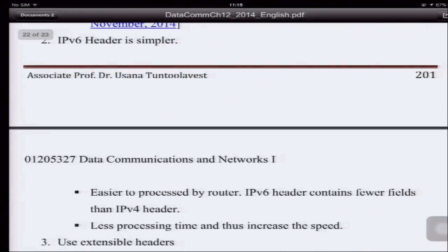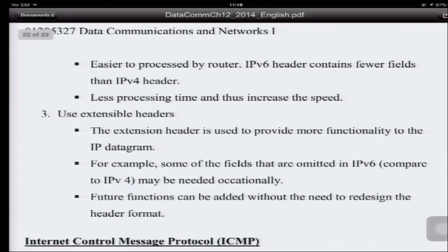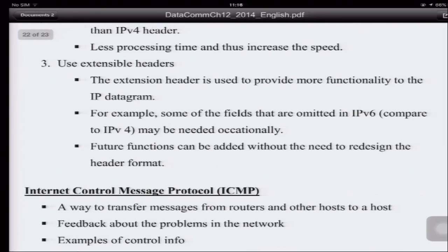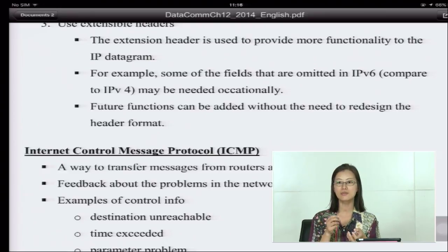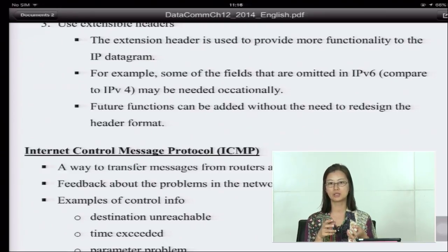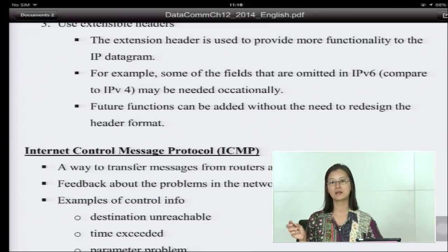By saying that the IPv6 header is simpler: it contains fewer fields than the IPv4 header, reducing processing time. Also, you can use IPv6 extensible headers — if you need an extension header to provide more functions to the IP data, you can add them. If you don't need it, you don't have to use it — just use the basic header. Some fields omitted in IPv6 that existed in IPv4 can be added when needed, and future functions can be added without redefining the header format, because new fields go in the extension part of the header.